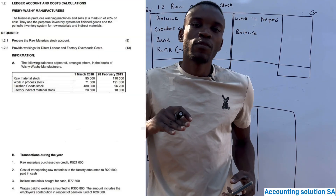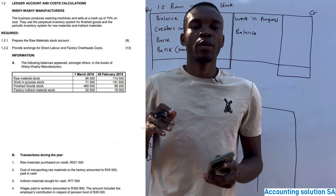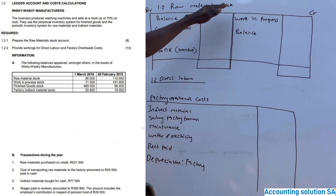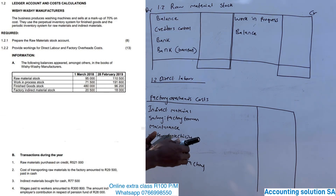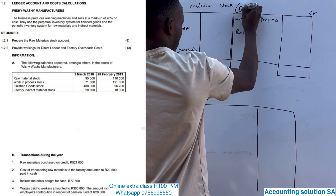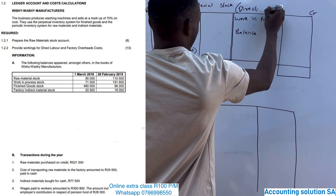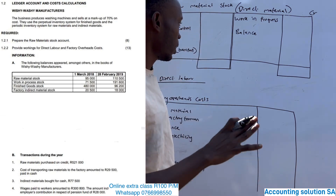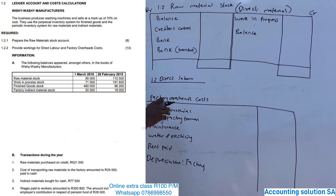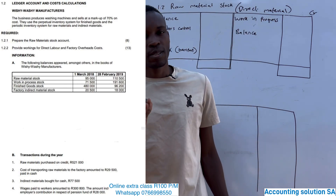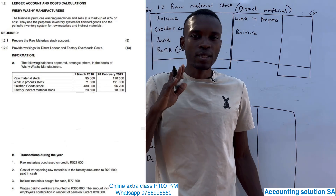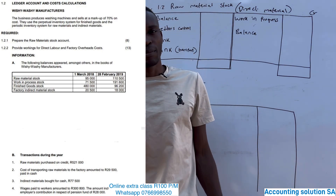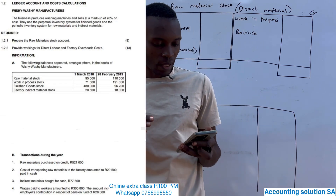Hi Grade 11 students. In today's video we are going to continue with our cost accounting or manufacturing. We are going to do what we call a raw material account, which is also known as direct material. Direct material and raw material is one and the same thing. After that we are going to calculate direct labor, then factory overhead cost. Please watch until the end so you gain something new under this cost accounting — it's a very simple and straightforward chapter.